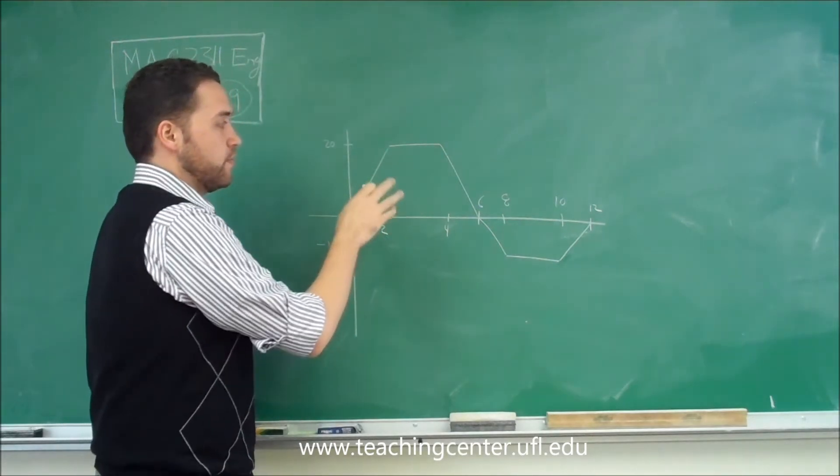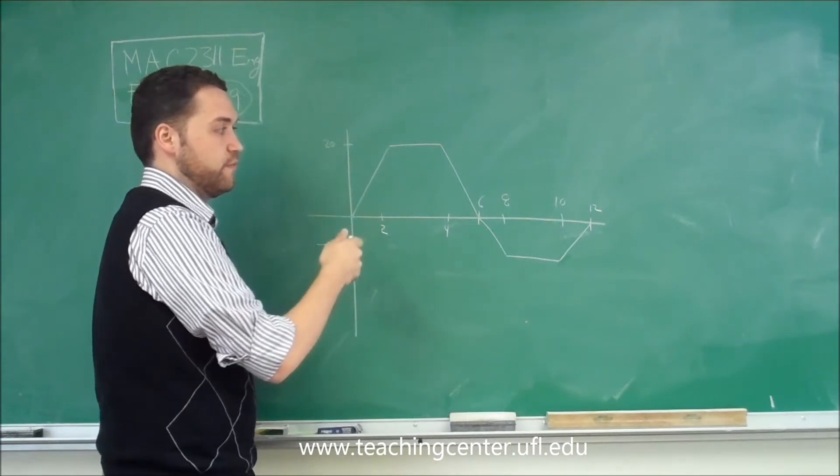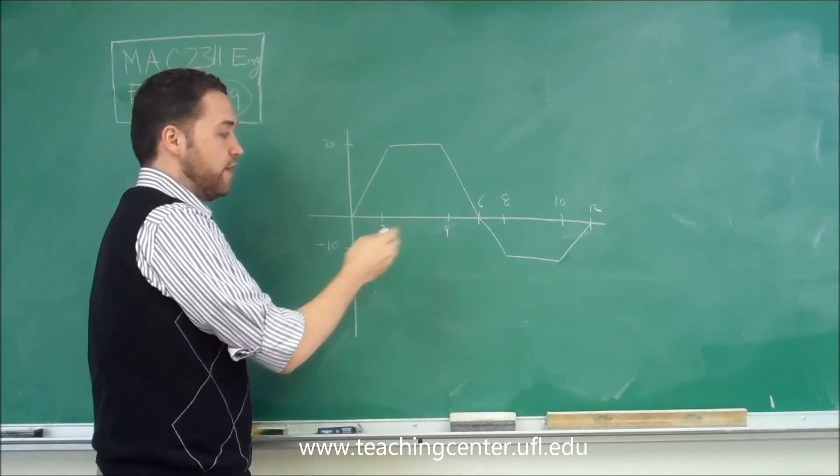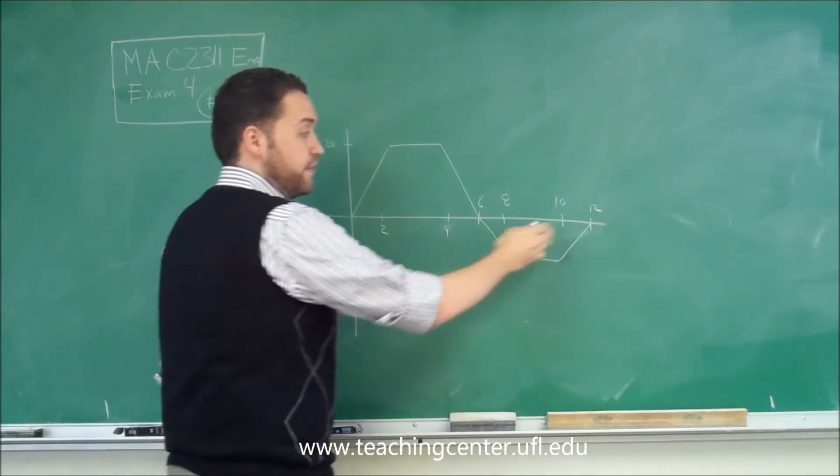So if this is going to be a rate, then obviously we want to take the anti-derivative, we need to integrate. And zero to twelve would go from the very beginning of the curve to the very end of the curve.